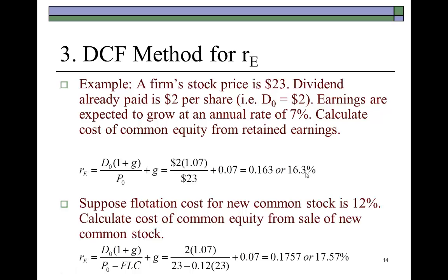Now keep in mind that common equity could either be generated internally in the form of retained earnings or externally through the sale of new shares of common stock. If the firm's common equity comes in the form of the sale of new shares of common stock, then we must subtract the flotation cost involved from the price. In this example, after factoring in the flotation cost — which comes out to be 12% of the price — we find the firm's cost of common equity to be 17.57%. As you would imagine, the cost of common equity when it comes from the sale of shares would be more expensive, for the obvious reason that the firm is having to pay flotation costs.